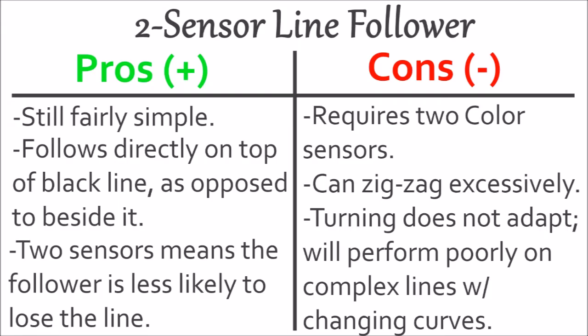The advantage of using a two-sensor line follower is that it's still fairly simple. It follows directly on top of the line as opposed to the side of it, which is a unique advantage, since most line followers follow to the side of the line on the boundary between black and white. Using two sensors also means the line follower is less likely to lose the line. However, it requires two color sensors, which can get expensive. Since it still uses boolean logic when turning, it still zigzags a bit and can even zigzag excessively if not adjusted correctly. Like the last one, there is no adaptation to turning radius, so if you have a complex line with variable turns, this is a poor choice because it can only be optimized for one type of turn.